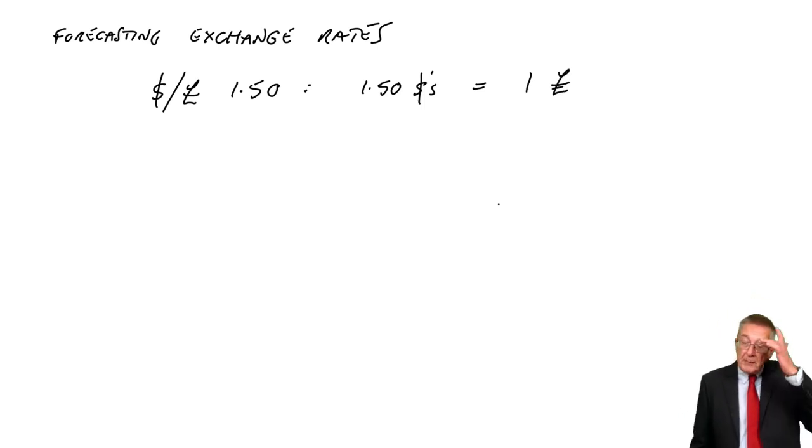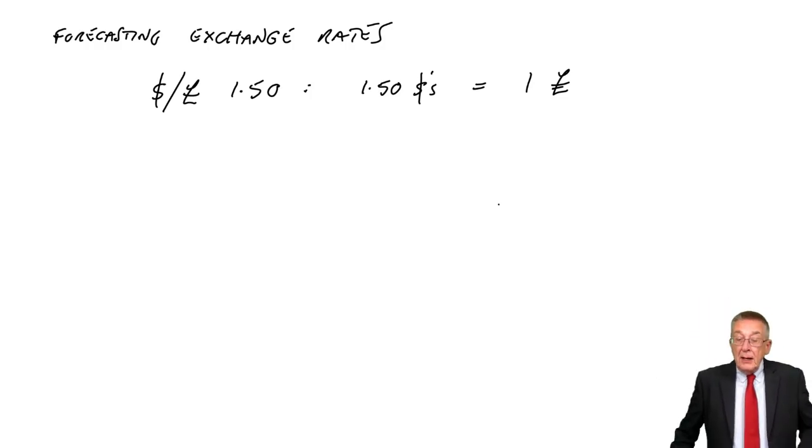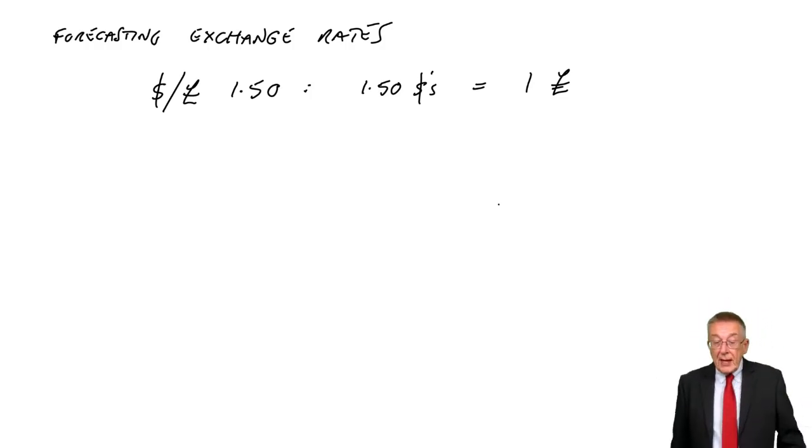There are different ways it can be quoted. I will go through that in the next lecture. But it is a dollar-pound quote. It's quoting the value in dollars of £1. £1 is $1.5.